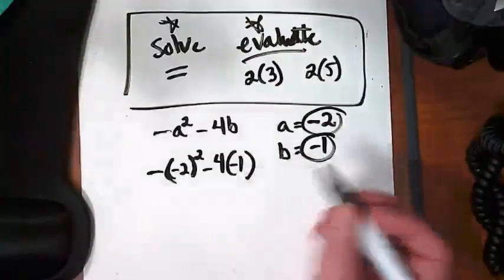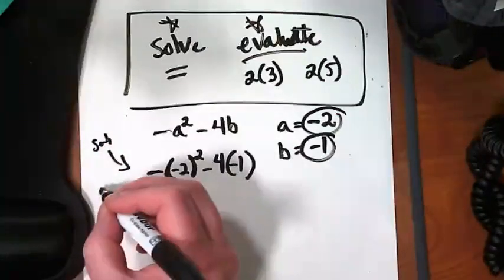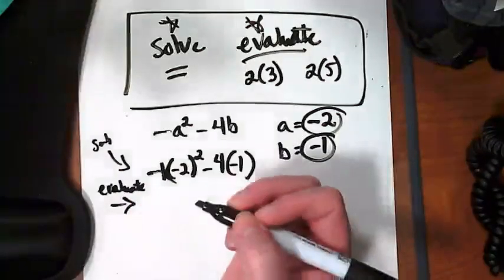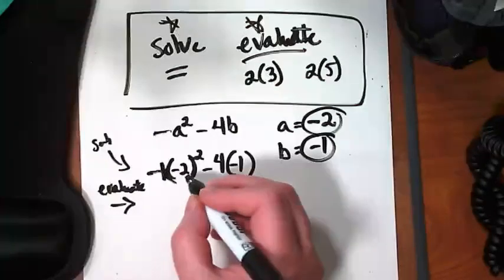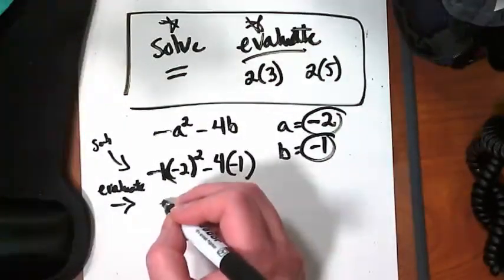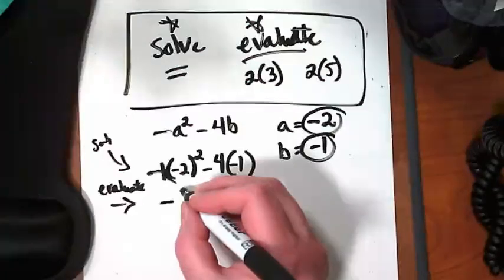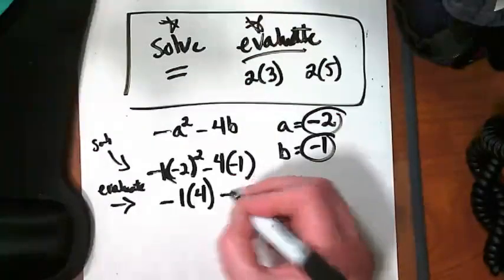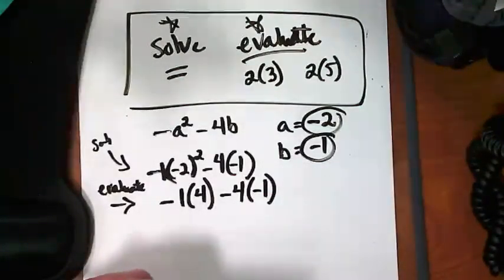Then I'm going to do order of operations to solve. My first step was I substitute. My second step is to start to evaluate by using order of operations. This negative here is a negative one, right? It's an invisible one, negative one. That means I'm going to do negative 2 times negative 2 first, and I'm going to get negative one times four minus four times negative one. All I've solved is the exponent, because order of operations says that exponents go first.